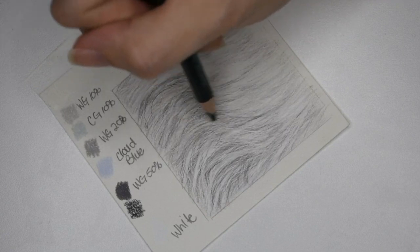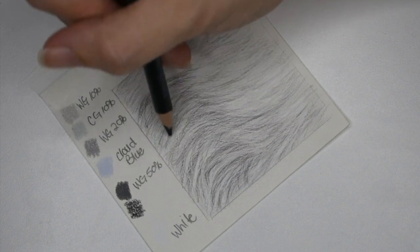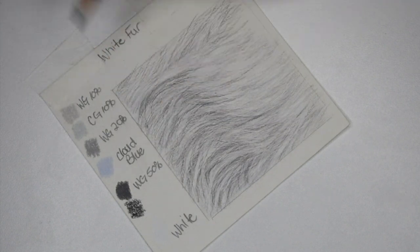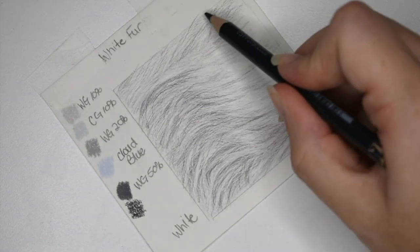At this point I noticed I needed to go a little darker in some areas, so I added cool gray 90%, but I didn't use a hard pressure and used the flick motion to create more fine fur details.